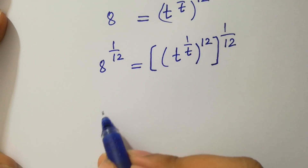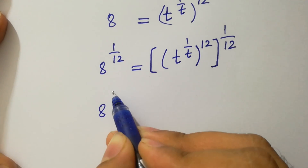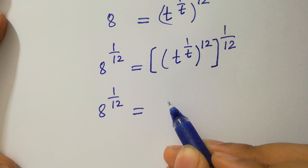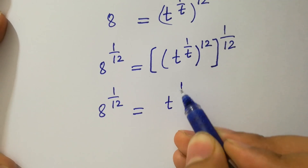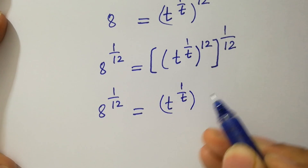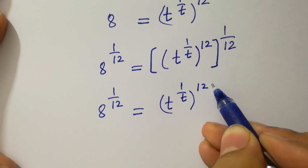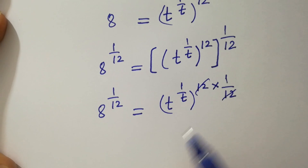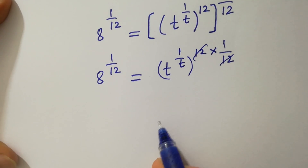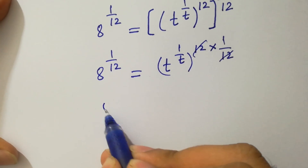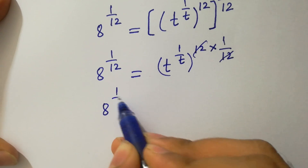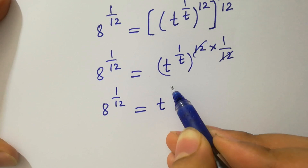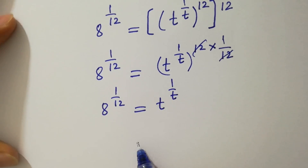Next, 8 to the power 1 over 12 equals t to the power 1 over t, to the whole power 12 times 1 over 12. The 12 and 12 cancel, giving us 8 to the power 1 over 12 equals t to the power 1 over t.